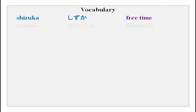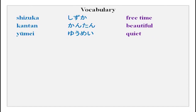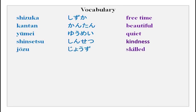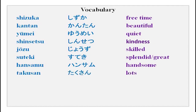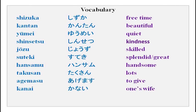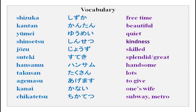There is some new vocabulary for you: shizuka, kantan, yumei, shinsetsu, jozu, suteki, hansamu, takusan, agemasu, kanai, and chikatetsu. The meanings are given and you can revise later.